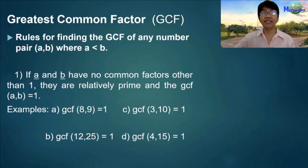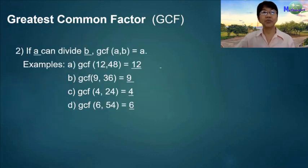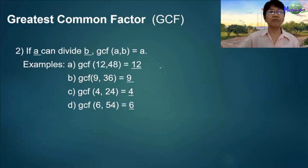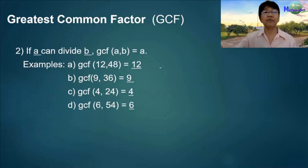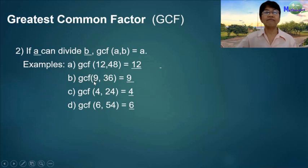GCF of 4 and 15 is 1, since they have no common factor. Rule 2: if A can divide B, the GCF of A and B is equal to A — the smaller number. If the smaller number can divide the bigger number, the GCF is the smaller number. Examples: GCF of 12 and 48 is 12; GCF of 9 and 36 is 9; GCF for letter C is 4; letter D is 6.